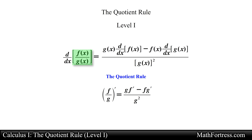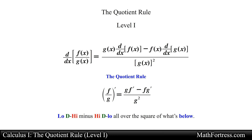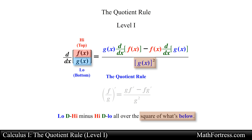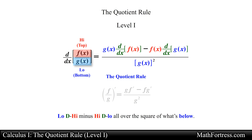Unfortunately you do have to memorize this rule, but keep in mind that you can always derive it using implicit differentiation. Another way of remembering this rule is by using a mnemonic device: let the numerator function be the 'high' function and g be the 'low' function. We can remember the quotient rule as 'low d high minus high d low, all over the square of what's below,' where the letter d represents the derivative.